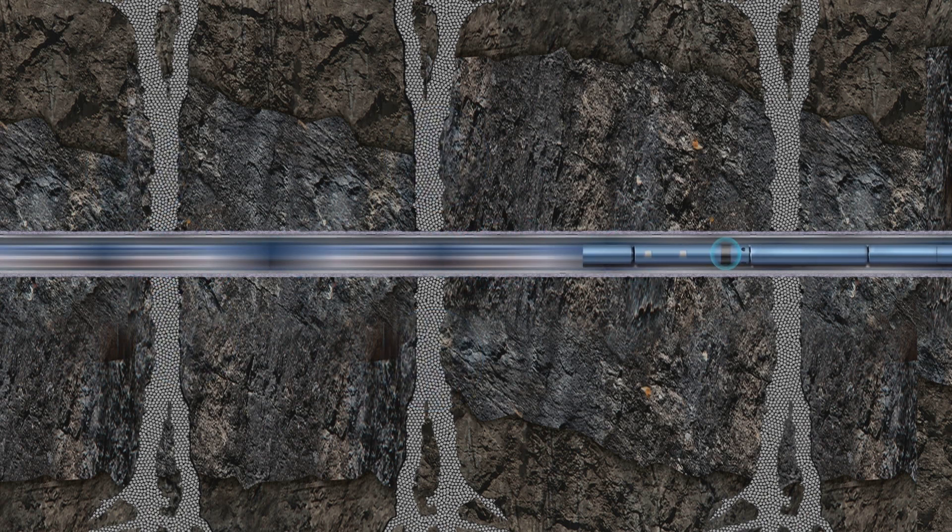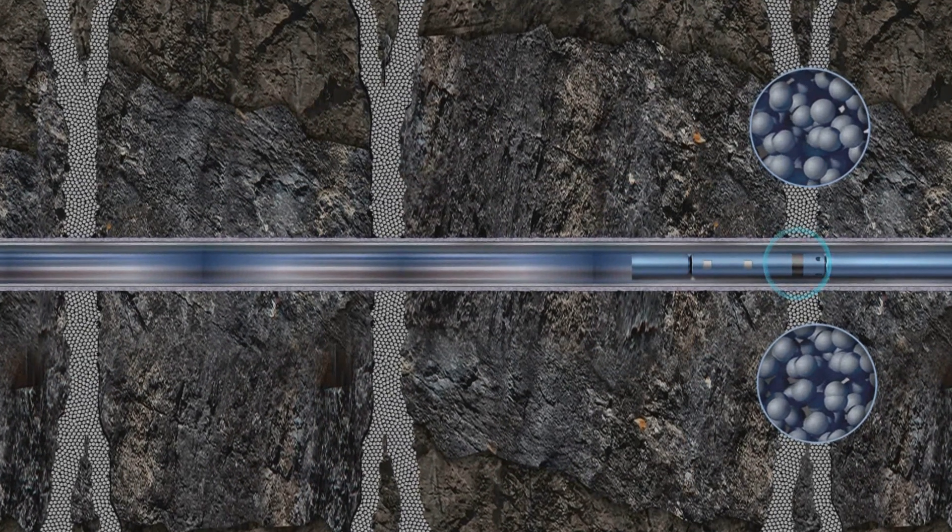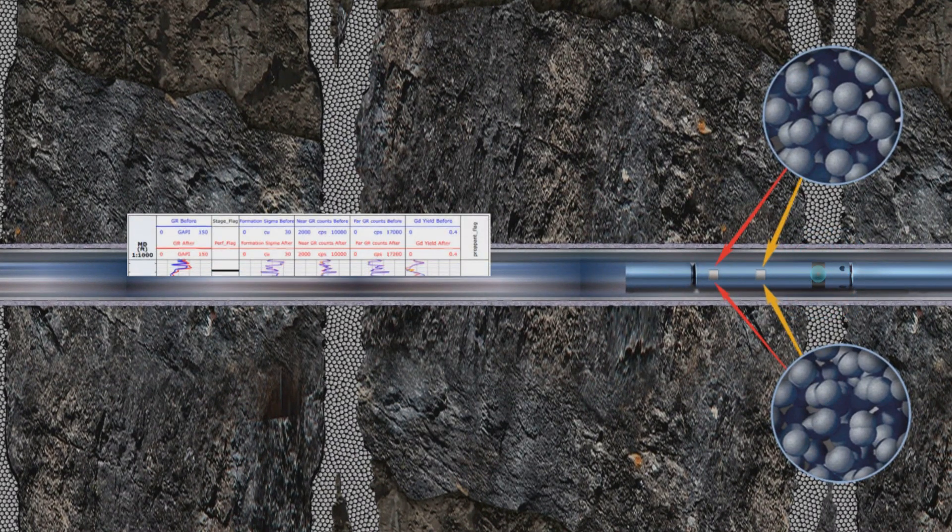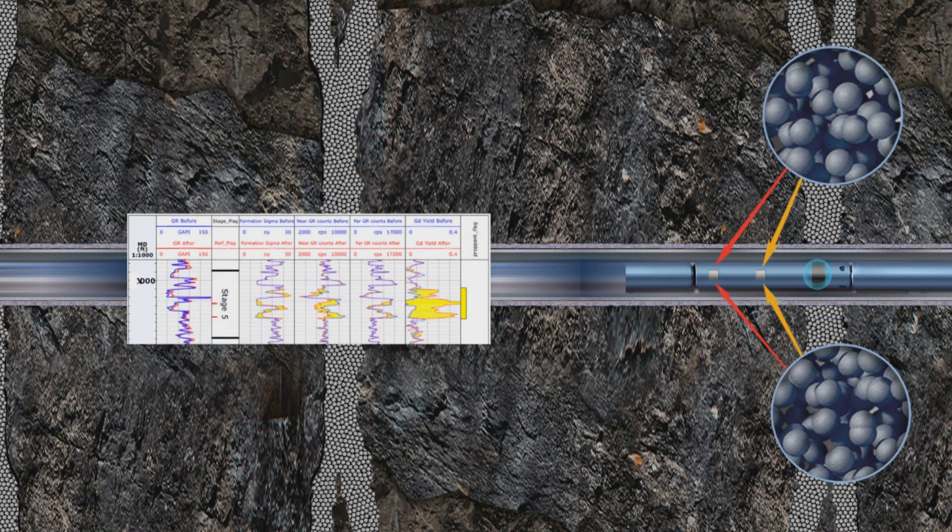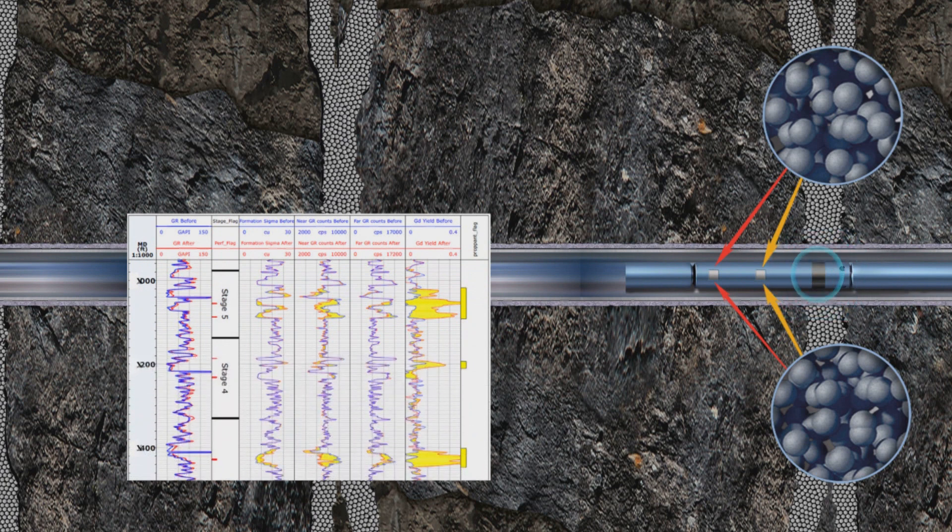Propant enhanced with CARBO NRT technology has a high neutron capture cross-section. As the tracer absorbs neutrons from the neutron tool, it emits gamma rays, altering the log response of a standard neutron log. The exact location of the propant is detected by the lack of gamma rays and the unique spectral signature of the tracer.